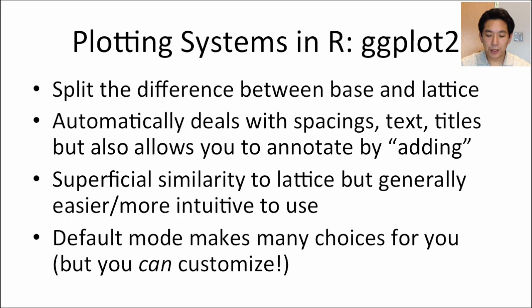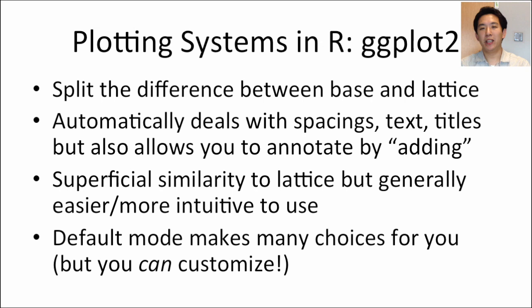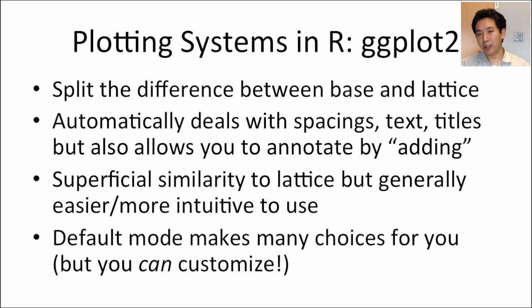Finally, we have the ggplot system, which in my opinion splits the difference between the base and lattice systems. It tries to preserve the piecemeal approach of adding to a plot one by one, while also taking care of a lot of the housekeeping — margins, spacing, and so on. It lets you do everything in an all-in-one model but also lets you annotate things by adding. The default modes make a lot of choices for you in terms of colors and symbols, and you can override them, but the defaults are often quite useful and totally reasonable when starting out.